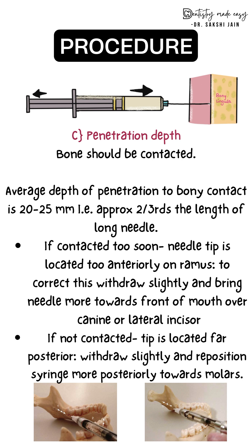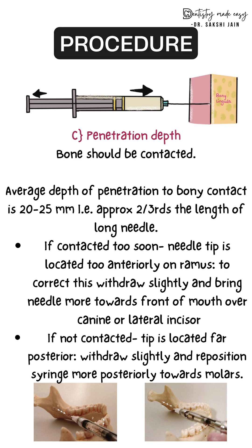There are two scenarios for bone contact issues. First, if the bone is contacted too soon — before even half the needle is inserted — it means the needle is too far anteriorly on the ramus. Withdraw slightly (not completely) and move the syringe more anteriorly toward the canine or lateral incisor on the opposite side. Second, if the bone is not contacted even when the complete needle is inside the mucous membrane, the needle is too far posteriorly. Withdraw slightly and move the syringe toward the molars posteriorly.